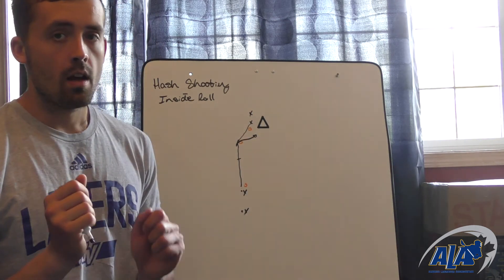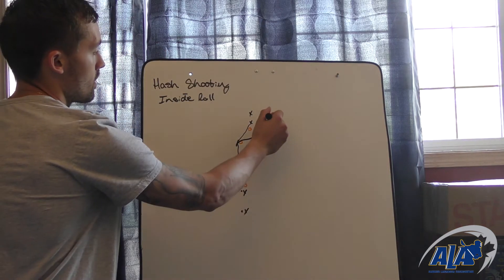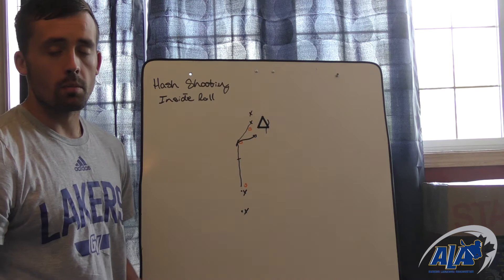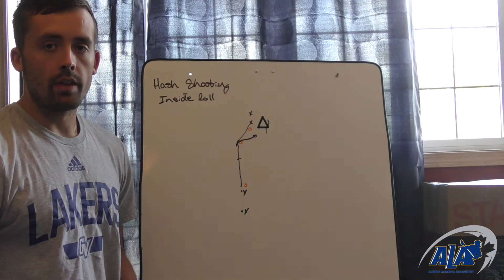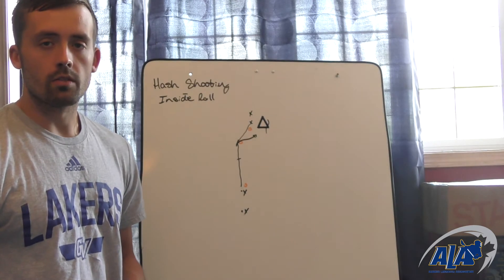So we're going to step up, plant, roll towards the net, and try to get down towards this opposite pipe, cutting off the defender, and then allowing us to have a nice easy shot close in front of the goal.